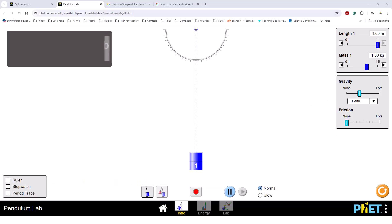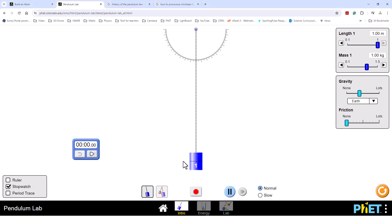Welcome to the PhET pendulum lab. You see in front of you the apparatus that's set up to allow us to perform Galileo's pendulum experiment. First of all let's add a stopwatch. We're setting our pendulum length to one meter, the mass to one kilogram, gravity to that of Earth, and we're going to make it no friction.